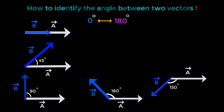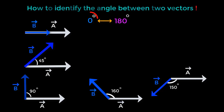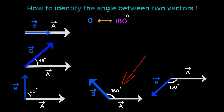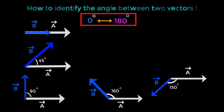Look at these different pictures of different vectors. This is vector A and this is vector B. The angle between them is zero degrees. This angle is 45 degrees. This angle is 90 degrees. This angle is 160 degrees and this angle is 150 degrees. All of these angles are the angles between vector A and vector B, as they all lie between zero degrees and 180 degrees.